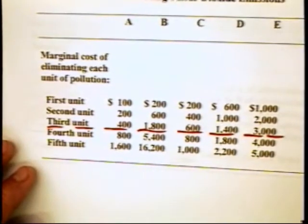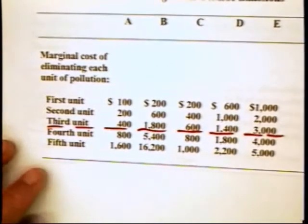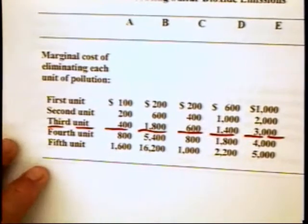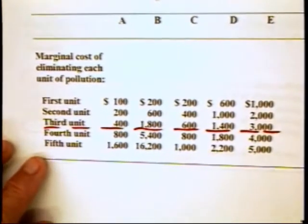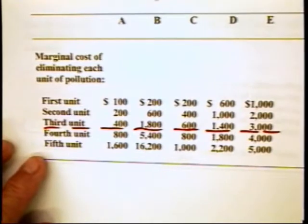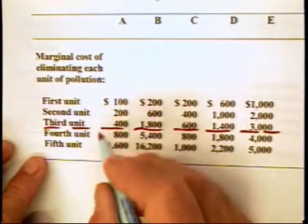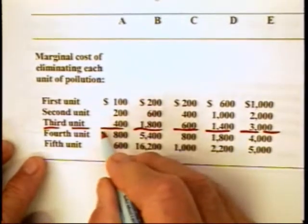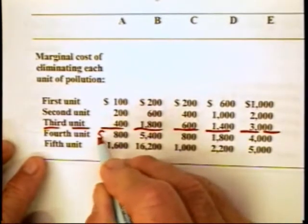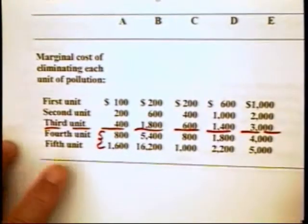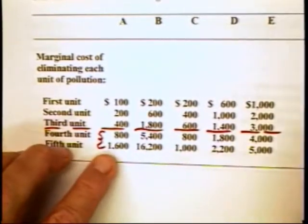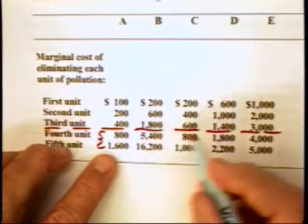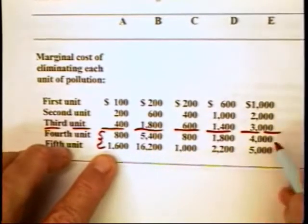So the politics favors the standards method. Now, one way in which we can make pollution control more cost effective under a standard is to simply say firm A has two rights to pollute and firm A can sell those rights to pollute — and so can firms B, C, D, and E.